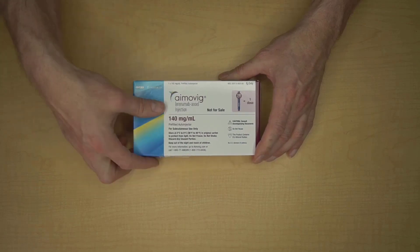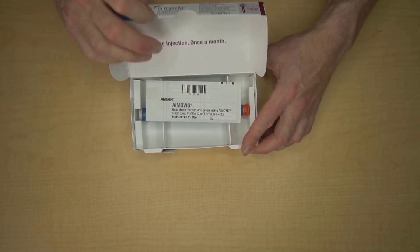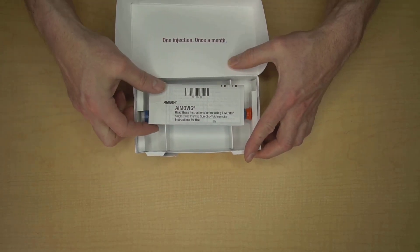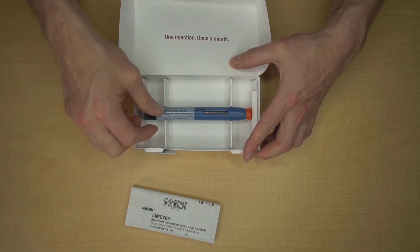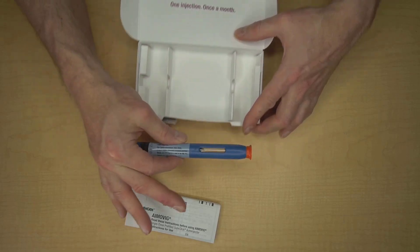So here's the Amovig box, and it's usually sealed somewhere along the front. This is the prescribing information, which is really useful and probably worth a read. And then when you get the Amovig, just lift it straight up out of the box.